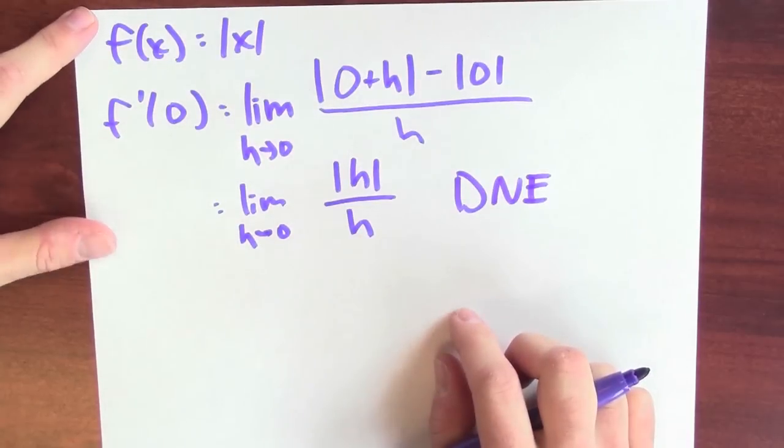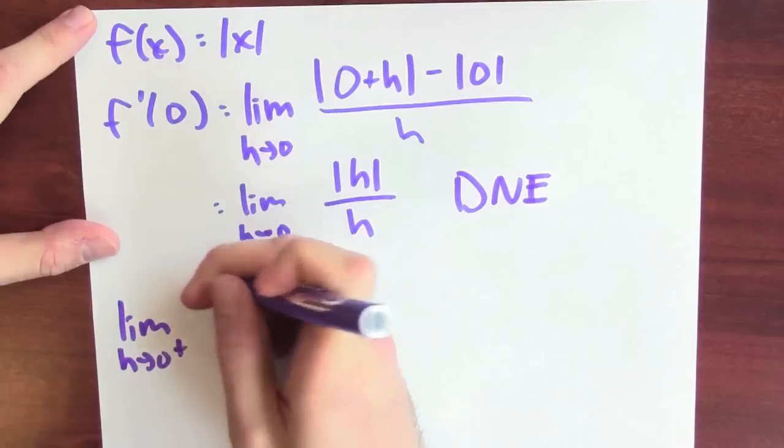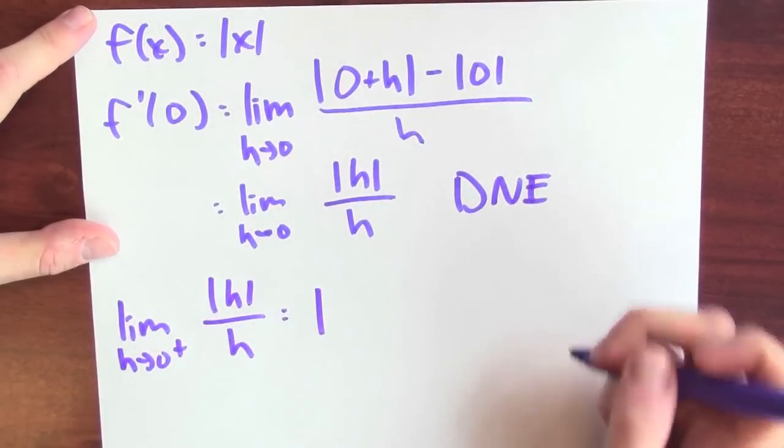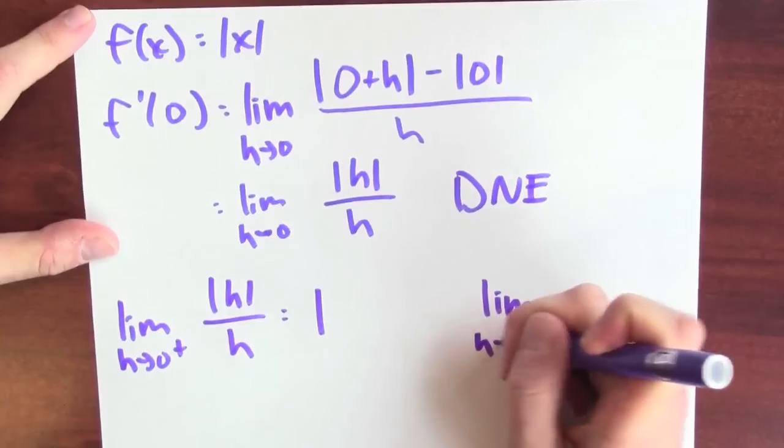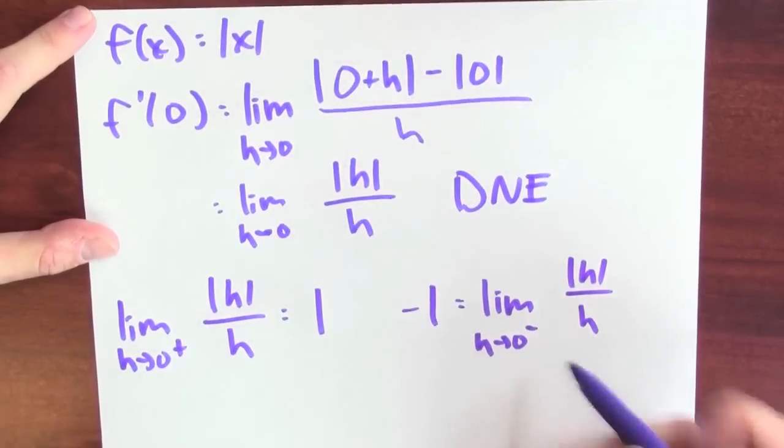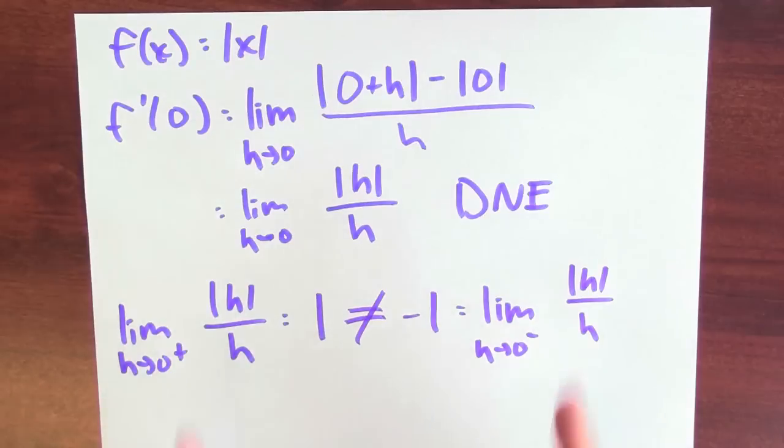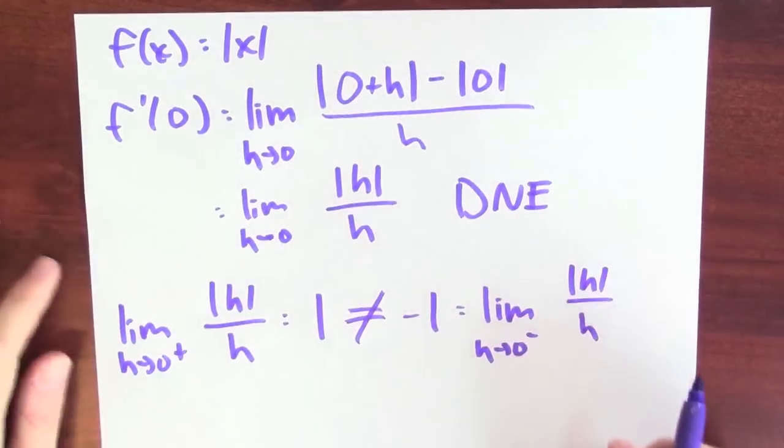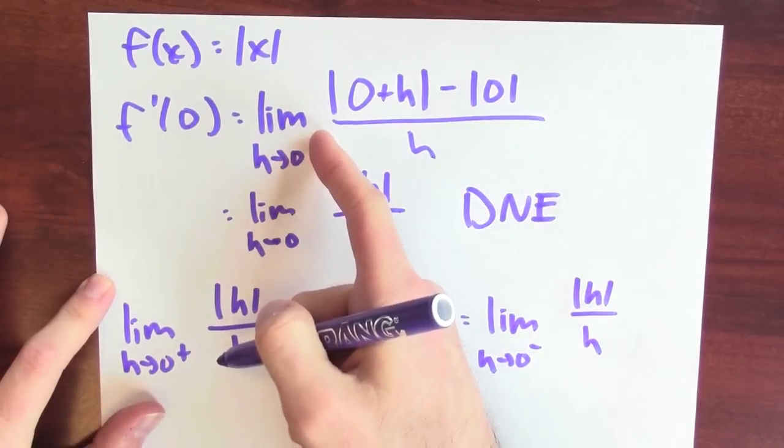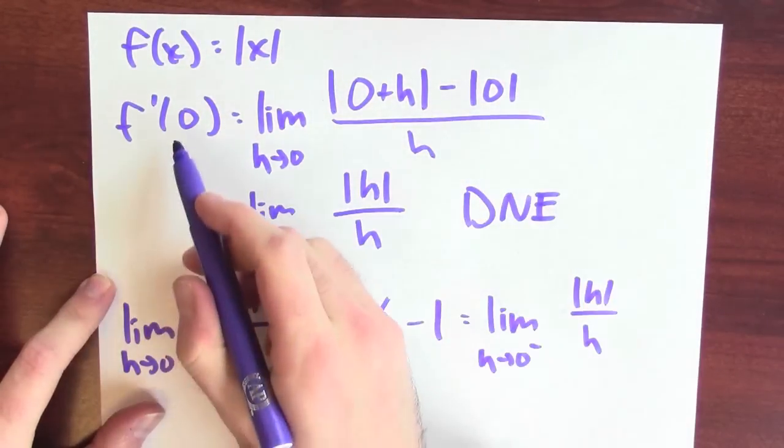What's the limit as h approaches zero from the right-hand side of the absolute value of h over h? It's 1. What's the limit as h approaches zero from the left-hand side of the absolute value of h over h? It's minus 1, and 1 is not equal to minus 1. Because the one-sided limits disagree, the two-sided limit doesn't exist, and this limit calculating the derivative means that this function's not differentiable at zero.